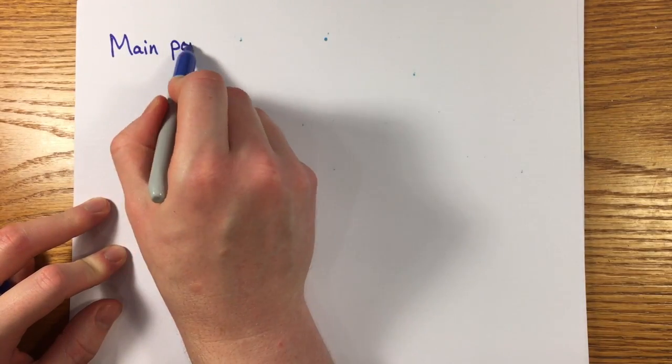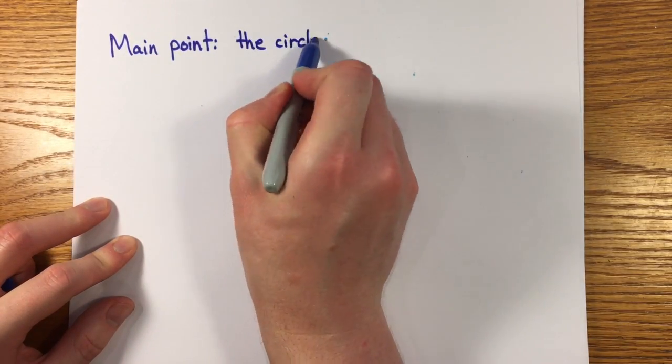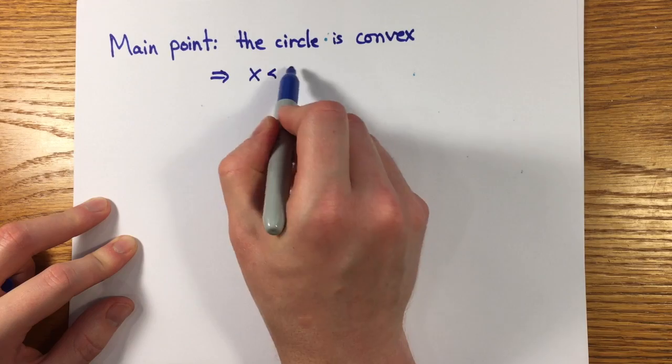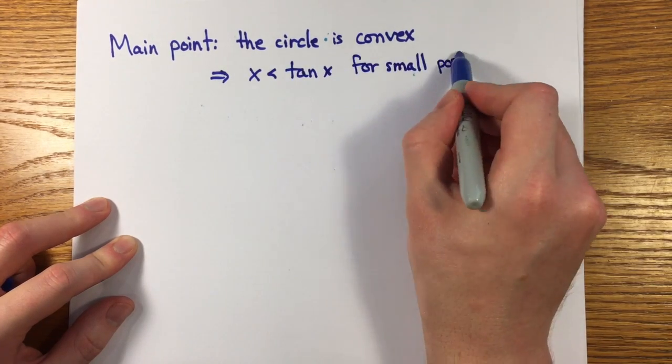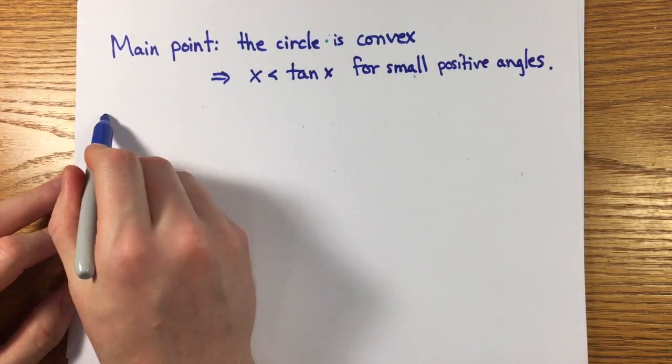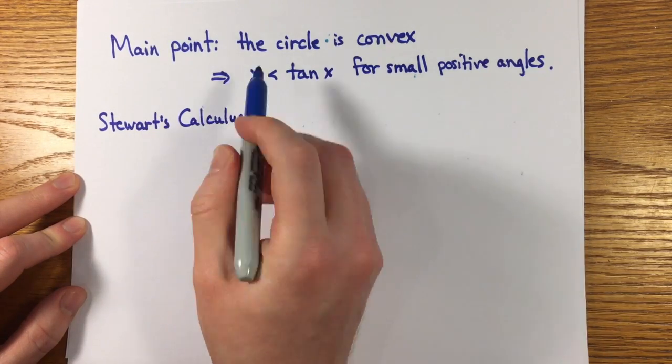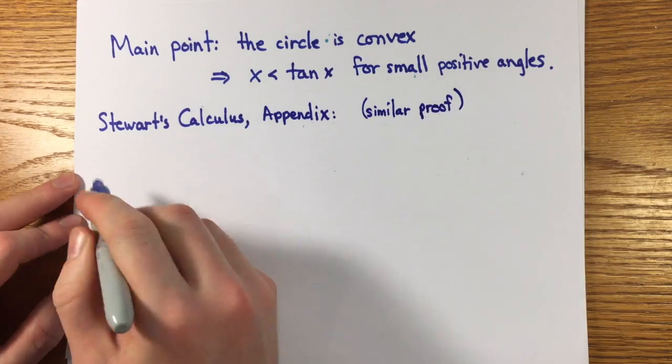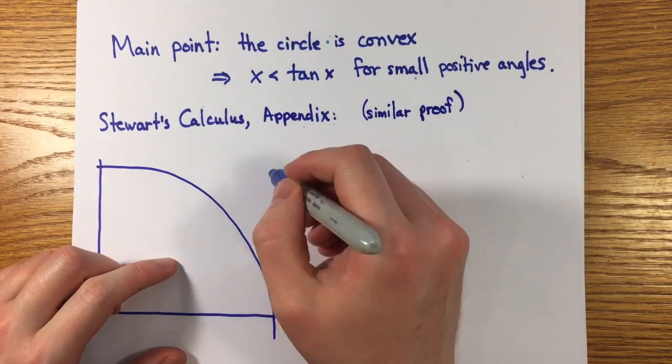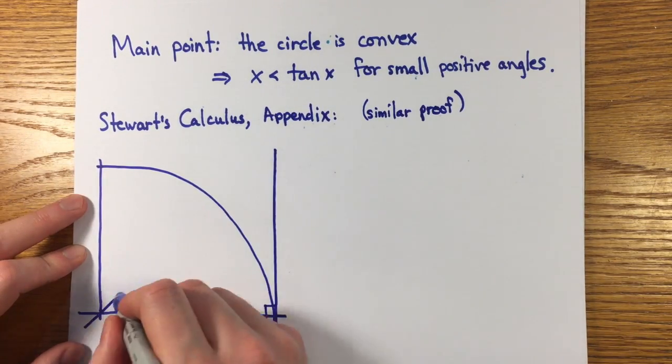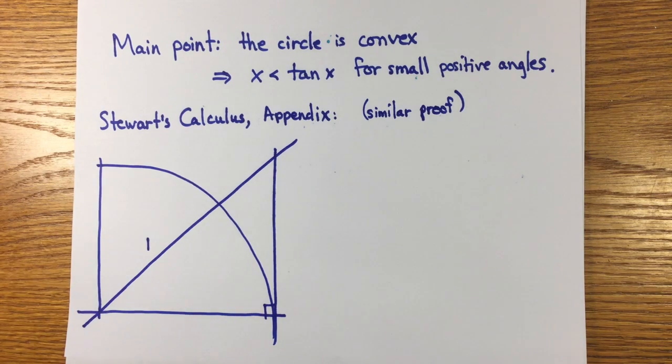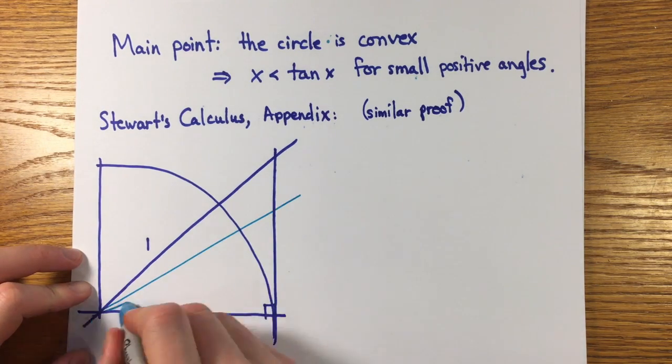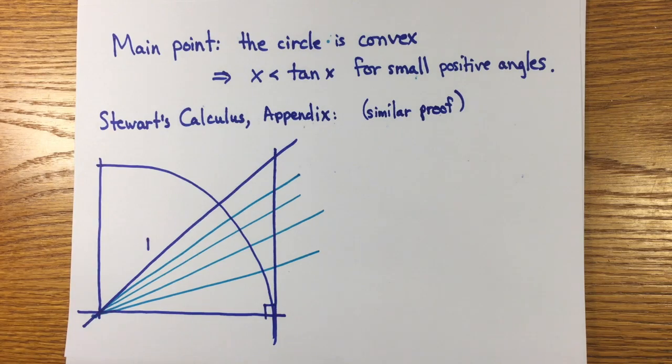The main point is the role of convexity in establishing that arcs of circles have well-defined lengths, and the lengths are bounded by corresponding segments of circumscribed polygons so that we could prove that x is less than tangent of x for small arcs. I've never seen this point emphasized in any calculus textbook or lecture, though to the credit of James Stewart, author of the most popular college calculus textbook, he does provide in an appendix a geometric proof that x is less than tangent of x.